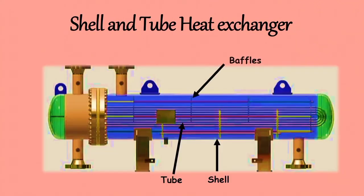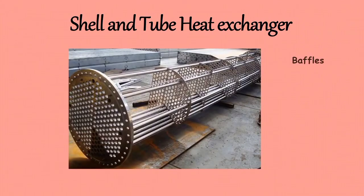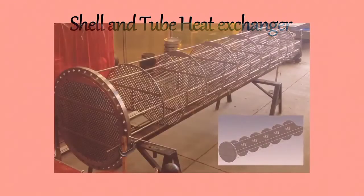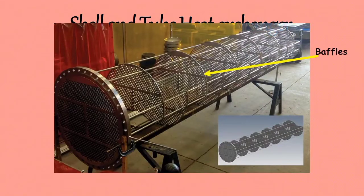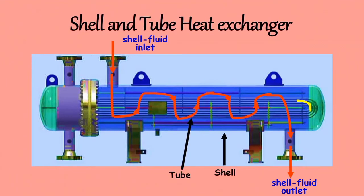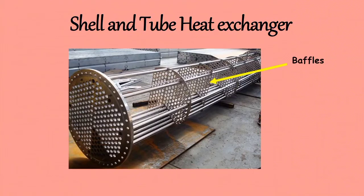The next component is Baffles. Baffles are commonly employed within the shell of a heat exchanger to increase the rate of heat transfer by increasing the velocity and turbulence of the shell side fluid. They are also used for structural support for the tubes and as dampers against vibration. The baffles cause the fluid to flow through the shell at right angles to the axis of the tubes. To avoid bypassing the shell side fluid, the clearance between the baffles and shell, and between the baffles and tubes, must be minimum. The center-to-center distance between adjacent baffles is known as baffle spacing or baffle pitch. Baffle spacing should not be greater than the inside diameter of the shell, and not less than one-fifth of the inside diameter of the shell. The optimum baffle spacing is 0.3 to 0.50 times the shell diameter.